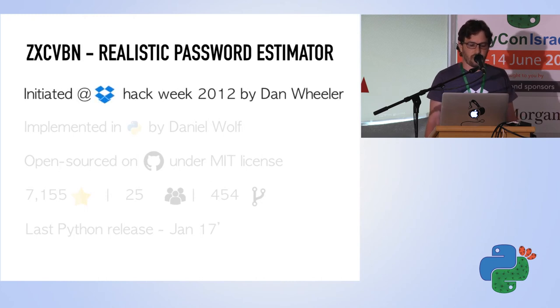It's a realistic password estimator. It was initiated at Dropbox in a hack week of 2012 by Dan Wheeler. In Dropbox, we have two weeks every year where we can literally do anything we want—from building cool open sources like this to making modifications on our product, creating internal tools, or even crazy things like the biggest Nintendo NES controller in the world.